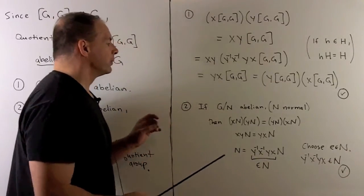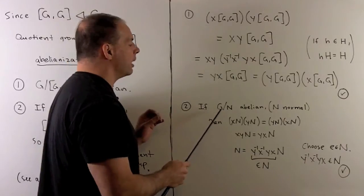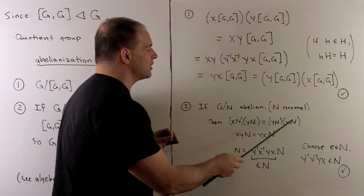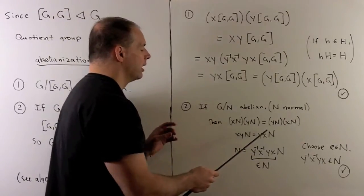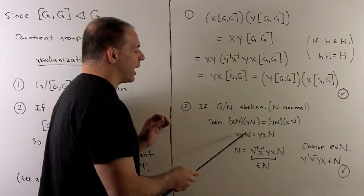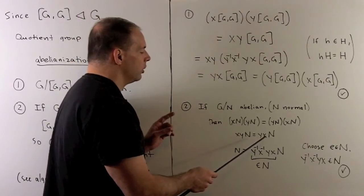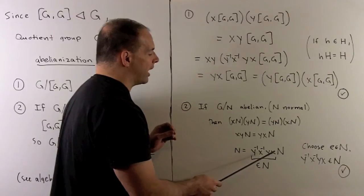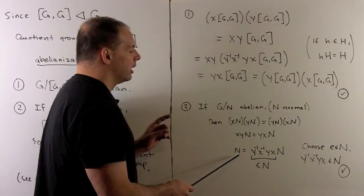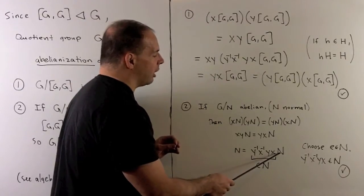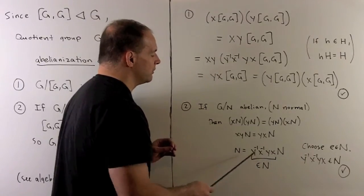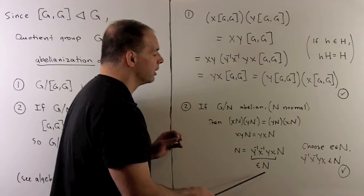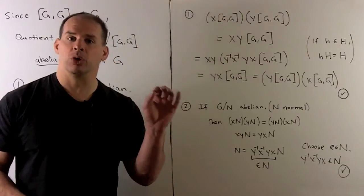For the second assertion, assume the quotient group G mod N is abelian with N normal. Since it's abelian, we take the product of cosets in either order and set them equal: xN equals yxN. Pushing x, y to the other side gives y inverse x inverse yx times N equals N. Since N contains the identity, this means the commutator y inverse x inverse yx lives in N. So every commutator is in N, meaning the commutator subgroup is a subgroup of N.